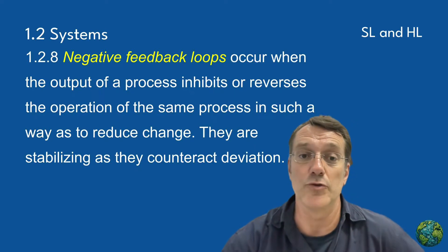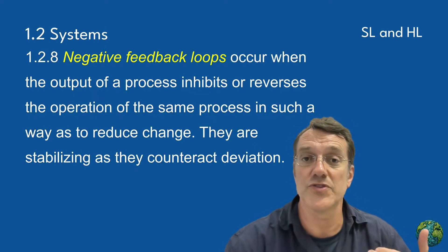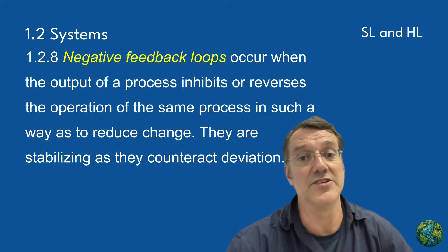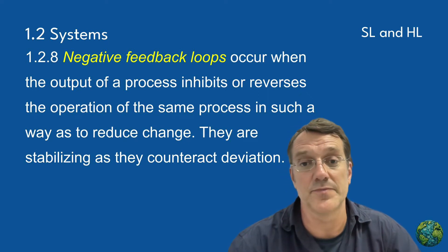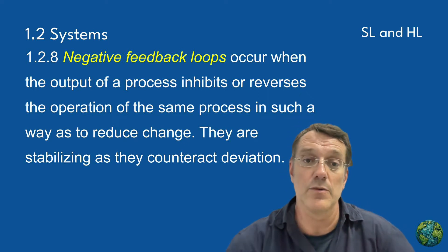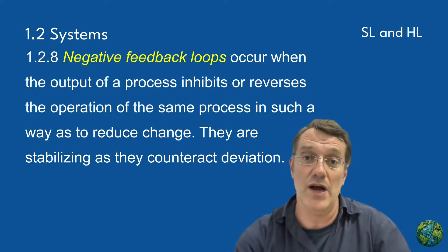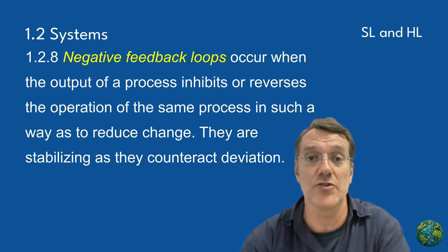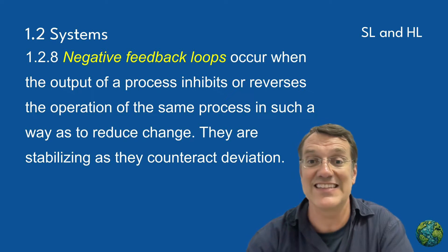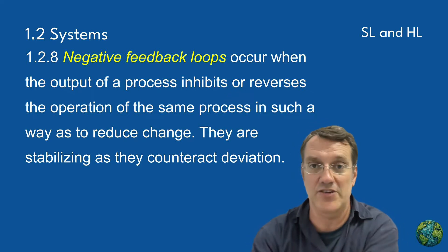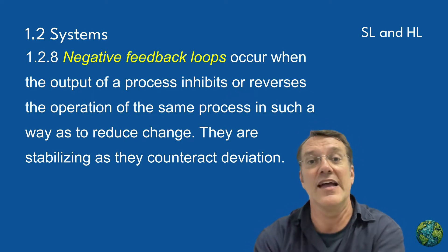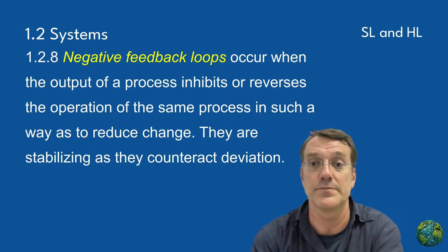Negative feedback loops are crucial stabilizing mechanisms in all ecosystems. They occur when the output of a process inhibits or reverses that same process, which counteracts deviations and maintains equilibrium.